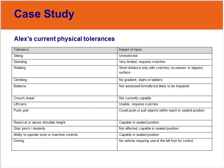Alex's balance has not been formally assessed but is likely to be impaired at present. Due to the limitation through the left lower limb, Alex would not currently be capable of safely crouching or kneeling. Because of the requirement to use crutches, Alex is unable to lift and carry things, but would be able to push or pull objects and manipulate objects in the seated position. Notably, Alex would not currently be capable of driving any vehicle requiring use of the left foot for control.